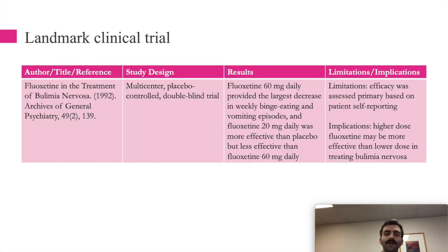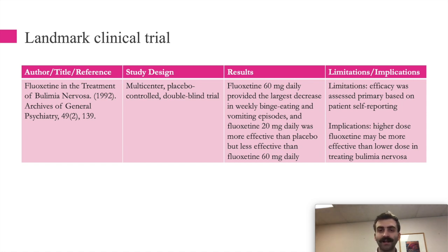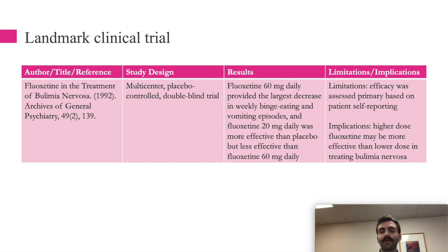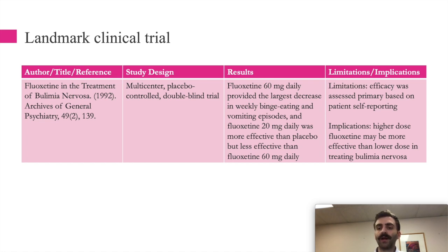A landmark 1992 clinical trial compared fluoxetine 60 mg, fluoxetine 20 mg, and placebo. Fluoxetine 60 mg was the most effective, fluoxetine 20 mg was next, and placebo was not effective. The key takeaway is that dosing matters when using fluoxetine for bulimia nervosa — higher doses are more effective.